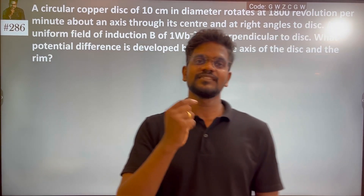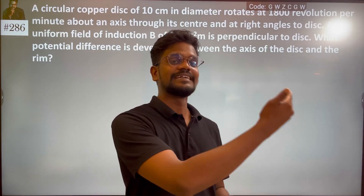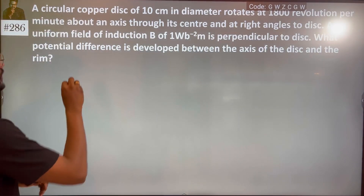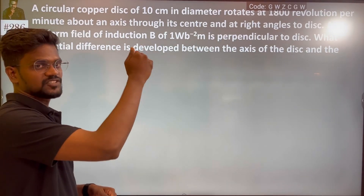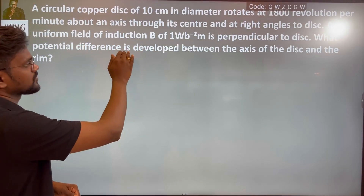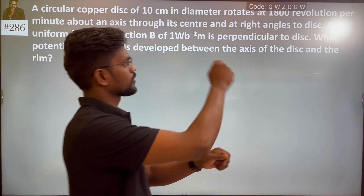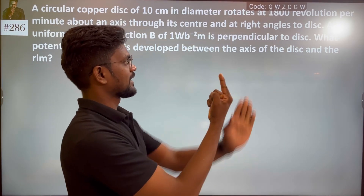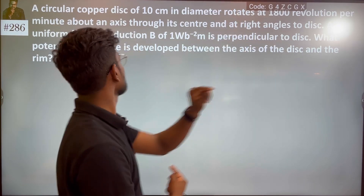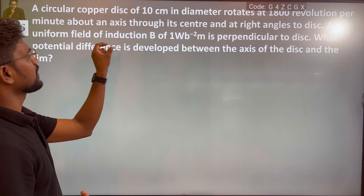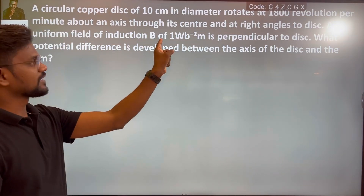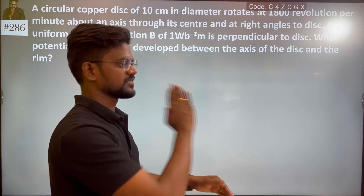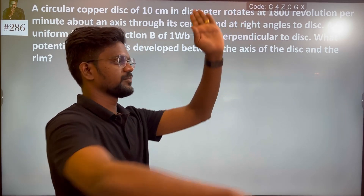Convert frequency to per second: 1800 divided by 60 gives the frequency, which is the number of cycles per second about an axis through its center. A uniform magnetic field of induction B with strength 1 Weber is perpendicular to the disk.